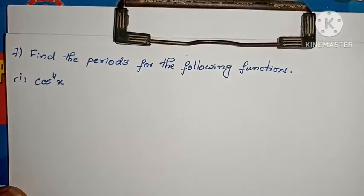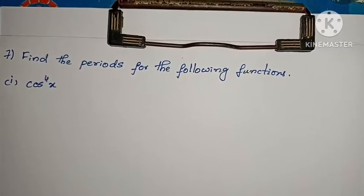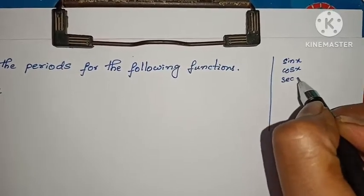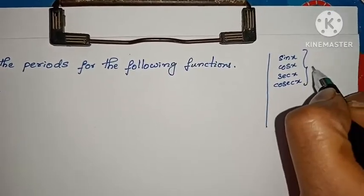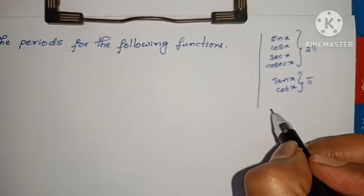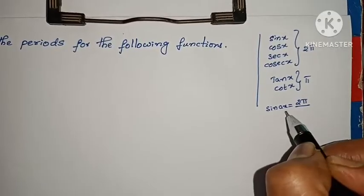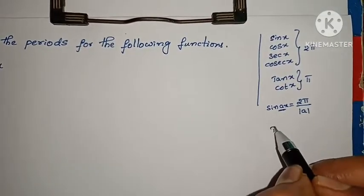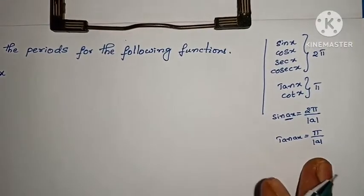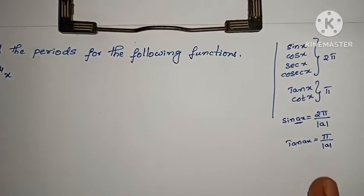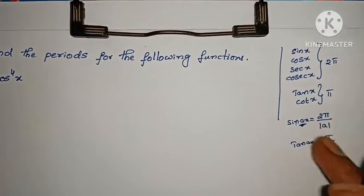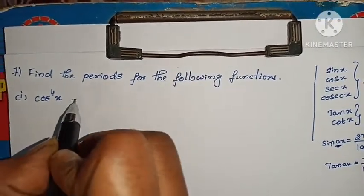Next problem: find the periods for the following functions. We will discuss the periods. For sinx, cosx, secx, and cosecx the period is 2π. For tanx and cotx the period is π. If the function is sin(ax), the period is 2π/a. Here we will discuss the formula for each sub-problem.